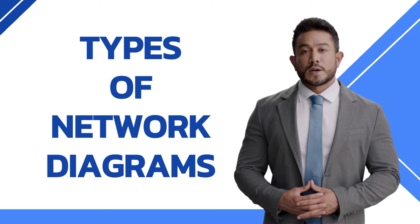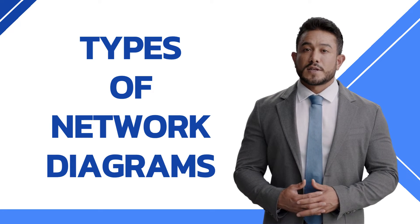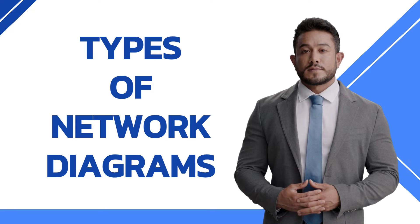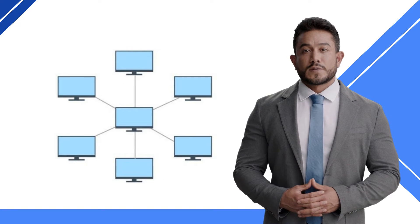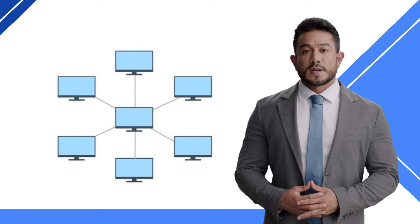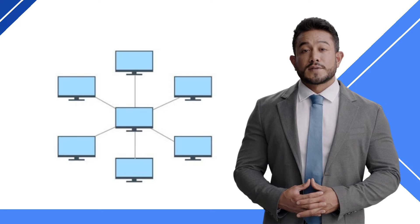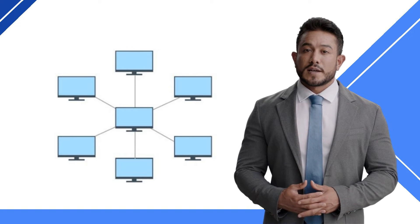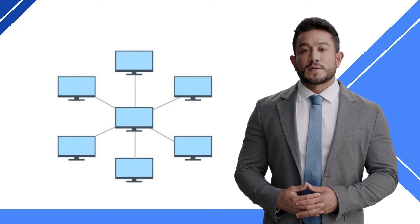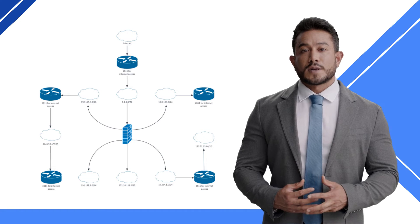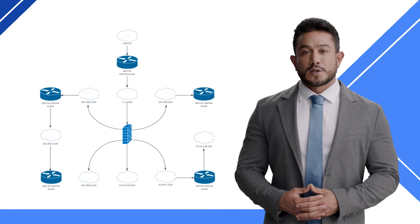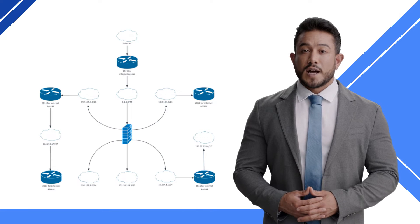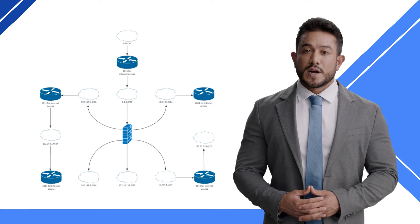There are different types of network diagrams used for different purposes. The most common types are physical network diagrams, which show the physical connections between devices and nodes, including details such as the type of cable used, the length of the cable, and the location of the devices. Logical network diagrams show the logical connections between devices and nodes, including details such as IP addresses, subnets, and routing protocols.